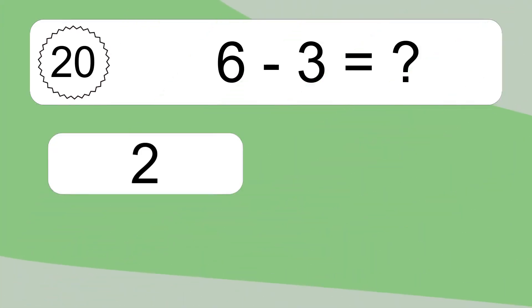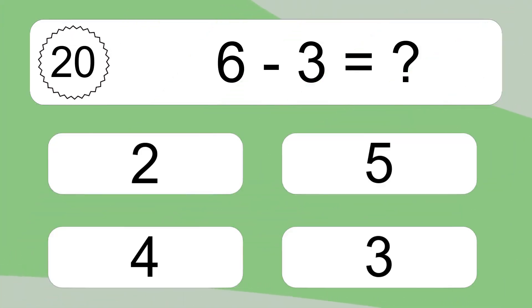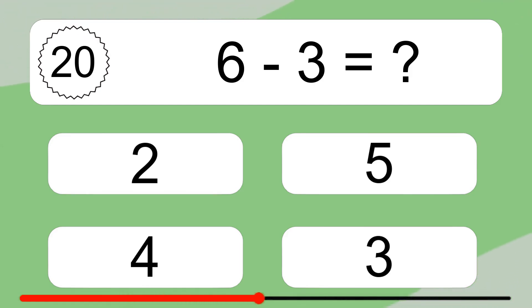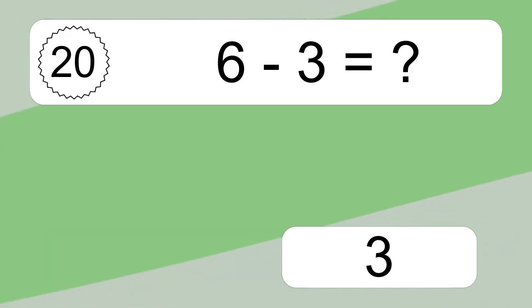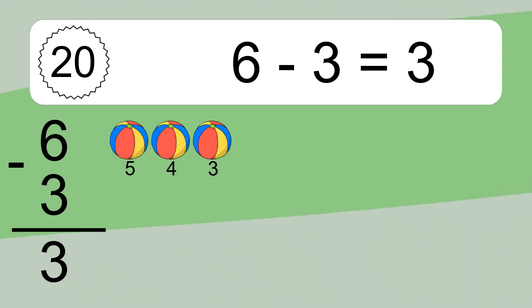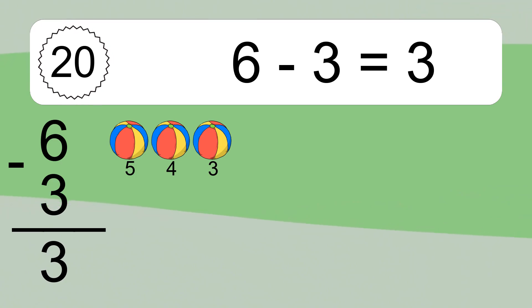6 minus 3 equals what? 6 minus 3 equals 3. Let's count it: 5, 4, 3.